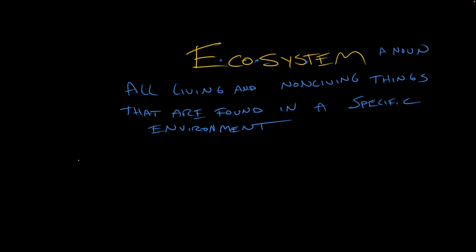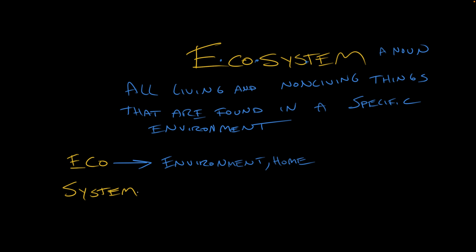Let's talk about this word's derivation. Eco is an interesting prefix because now it means having to do with the environment, but it ultimately comes from the Greek oikos, meaning home or dwelling place. The earth is our home, is the thinking there. System comes to us from Greek too, and it means the whole thing together.